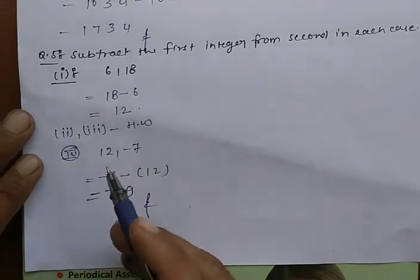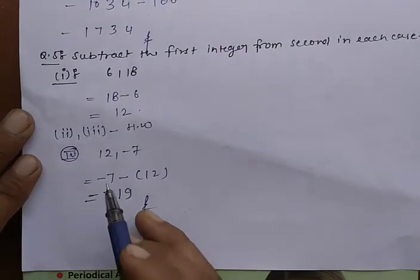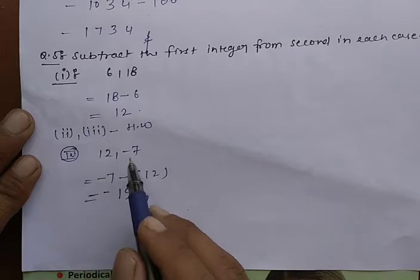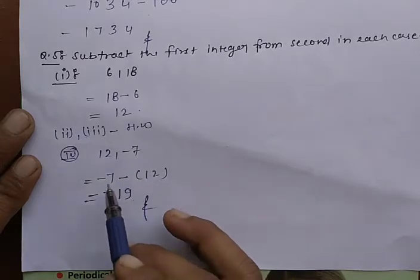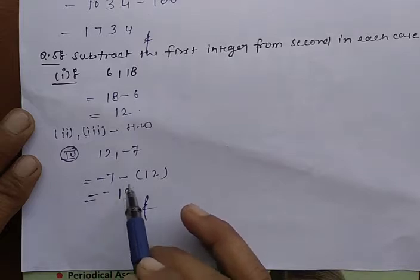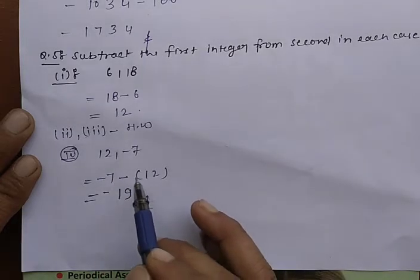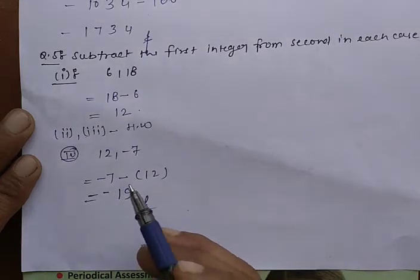Second and third - next one is 12 minus 7. Minus 7 is 19. Minus minus plus, 7 plus 12 is 19. Two digits, minus is minus.